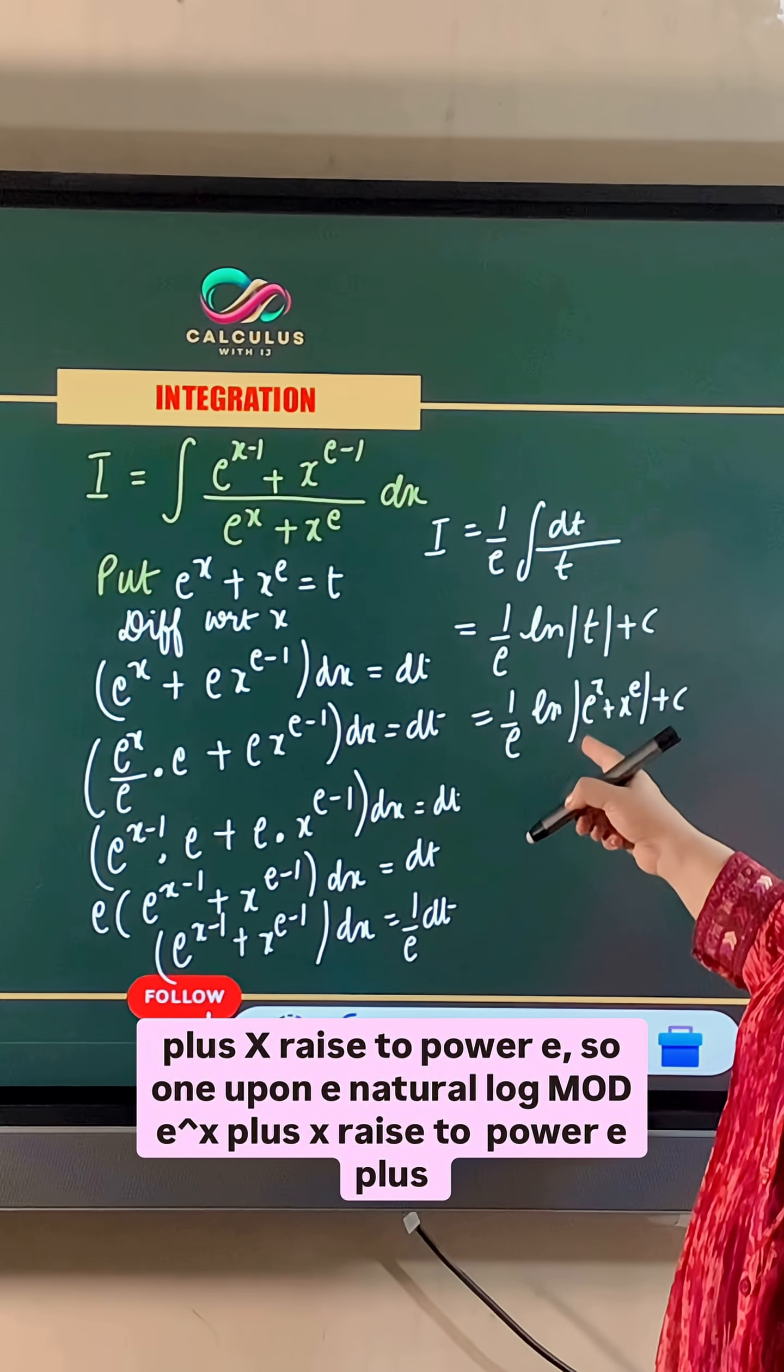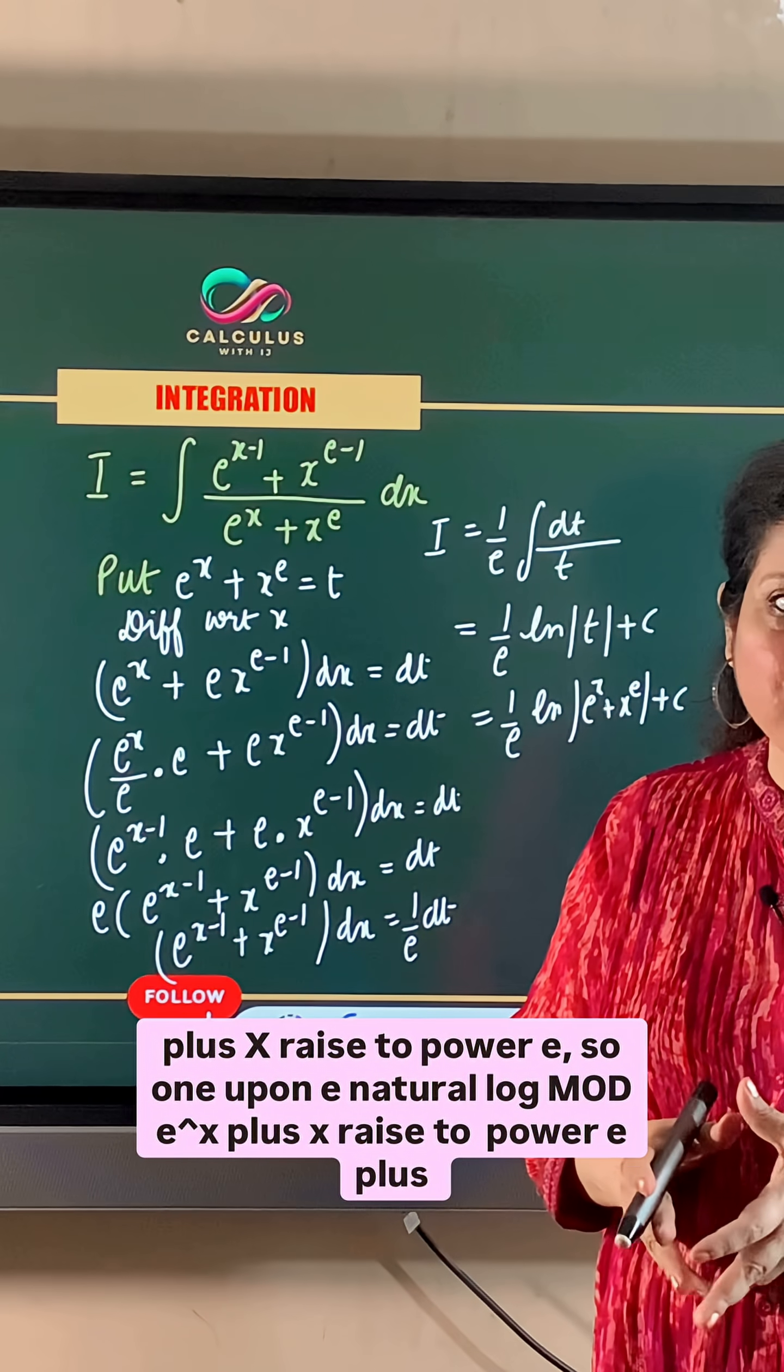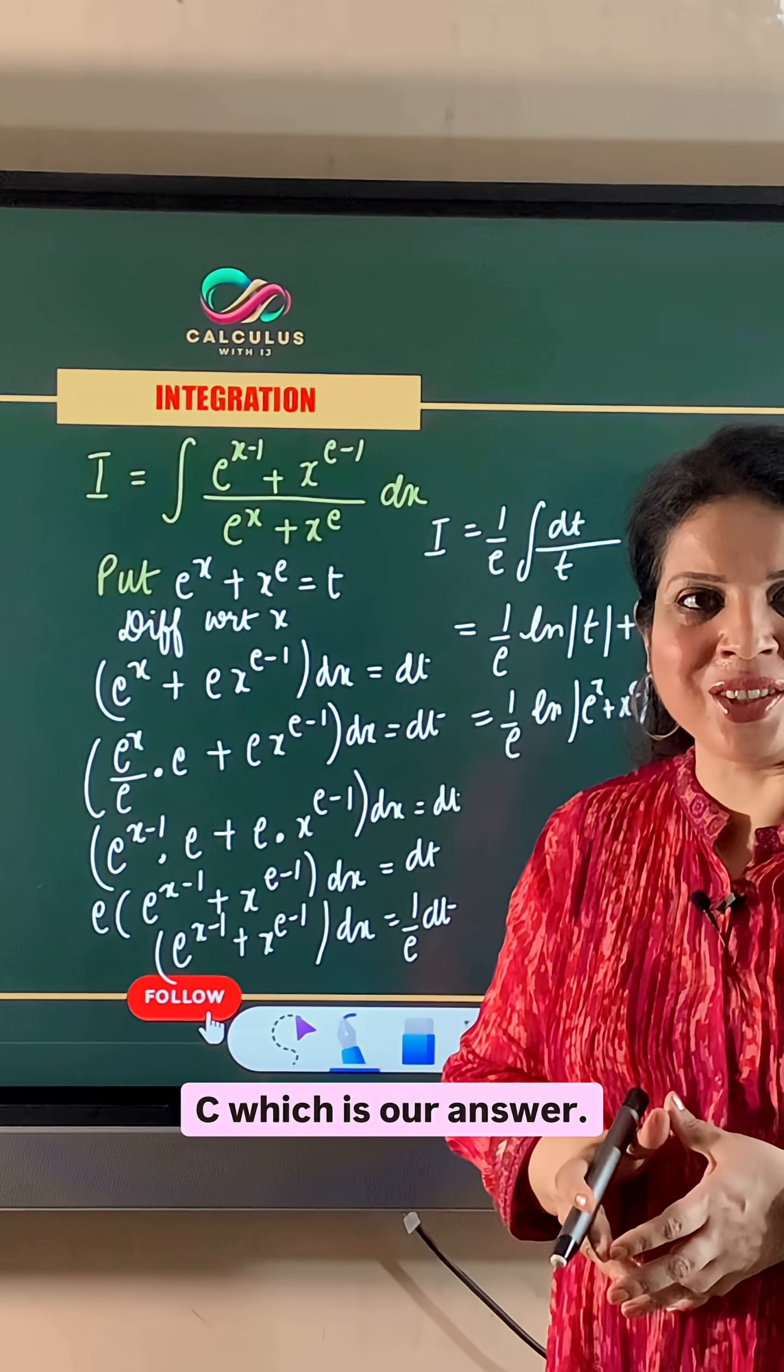So 1 upon e natural log mod e raised to power x plus x raised to power e plus c, which is our answer.